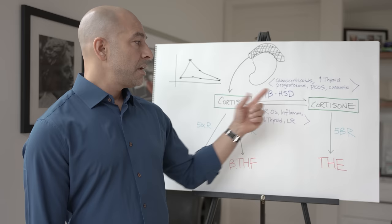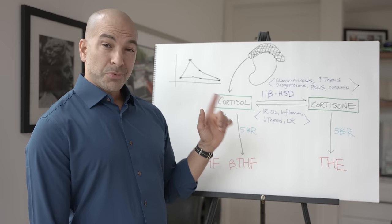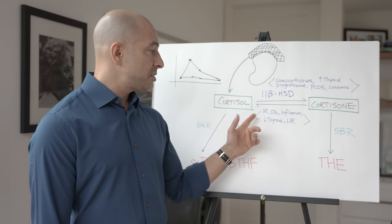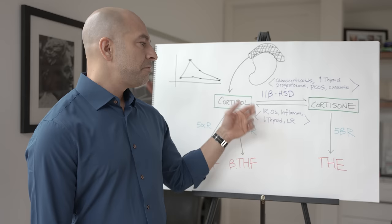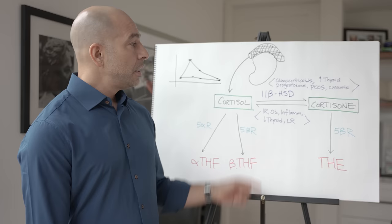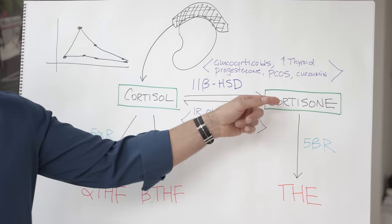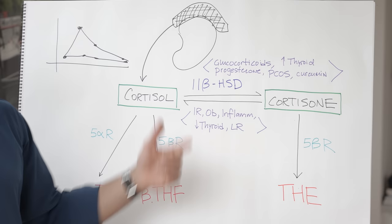Well, in that case, what we have to do is flip the way this enzyme's working, because there's an enzyme, 11-beta-HSD, that converts cortisol to cortisone and back. But here's what's interesting, is the direction of travel is determined by various things. So cortisone gets converted to cortisol preferentially when you have insulin resistance, obesity, inflammation, low thyroid function, leptin resistance.